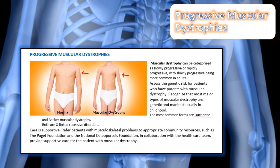Muscular dystrophy can be categorized as slowly progressive or rapidly progressive, with slowly progressive being most common in adults. Assess the genetic risk for patients whose parents have muscular dystrophy. Recognize that the most common major types of muscular dystrophy are genetic and manifest usually in childhood — these are covered in detail in your textbook. Care for patients with muscular dystrophy is supportive, and you should refer patients with musculoskeletal problems to appropriate community resources.